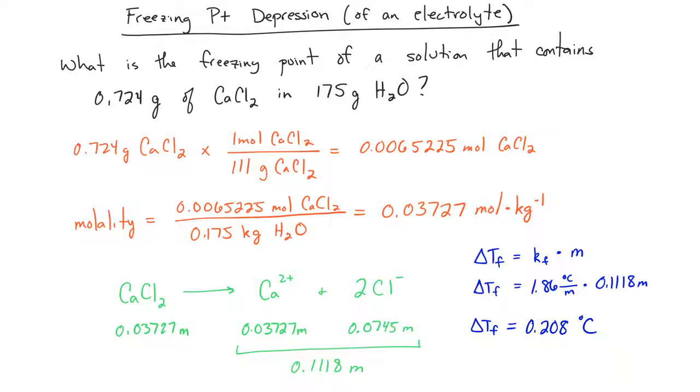This number is not the freezing point. What you have to do is take that number and subtract it from the freezing point of whatever solvent you're dealing with. In this case, we're dealing with water. Water has a freezing point of zero, so it's going to be 0°C minus 0.208°C. And so the answer is going to be negative 0.208°C.